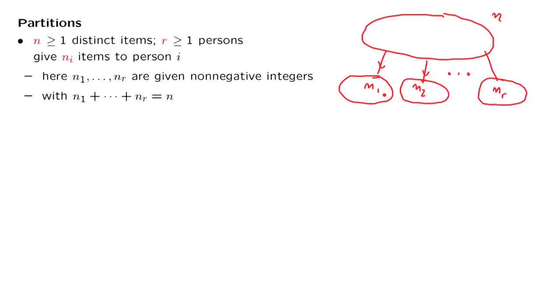We want to count the number of ways that this can be done. This is the number of ways that we can partition a given set into subsets of prescribed sizes. Let's use C to denote the number of ways that this can be done. We want to calculate this number C.